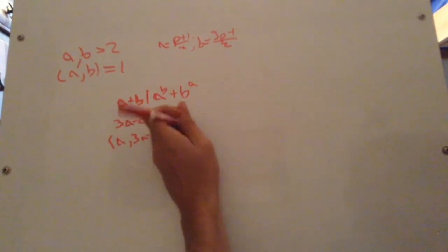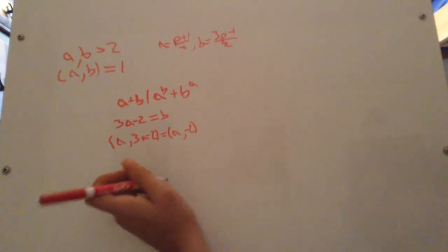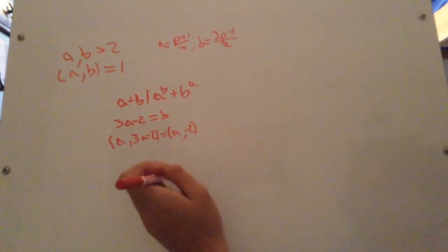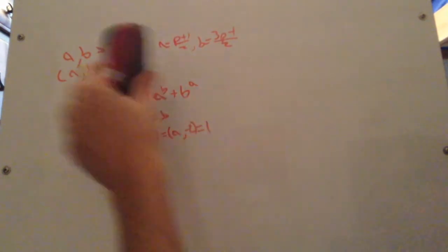So that means that the common factors between a and b is common factors between a and 3a minus 2, a and negative 2, could be positive 2, could be negative 2, doesn't really matter. So we know a is odd, so this has to be 1.